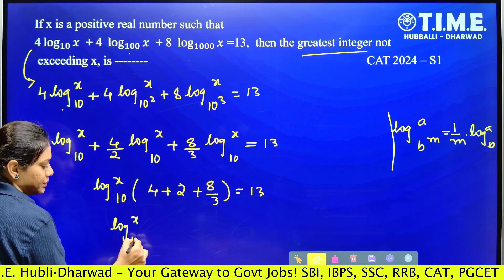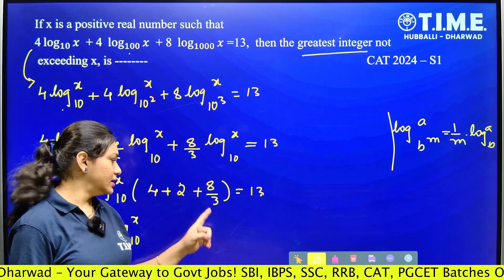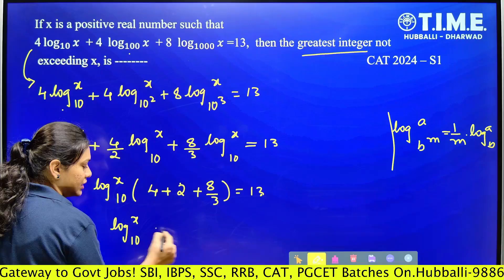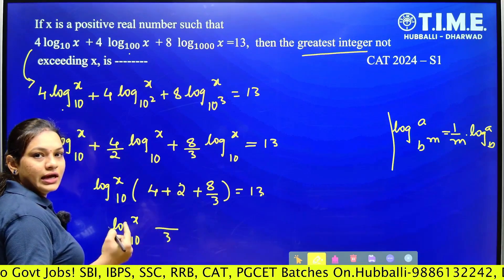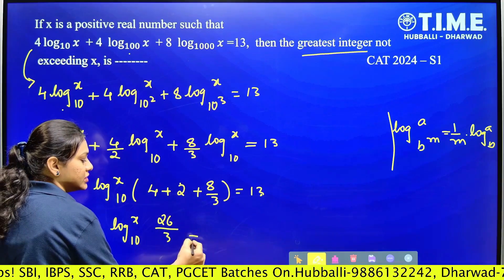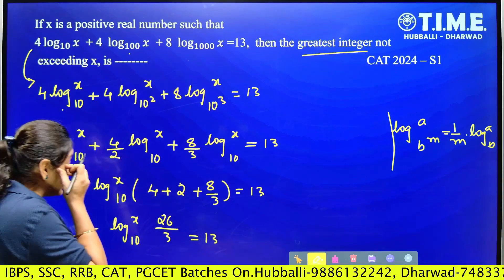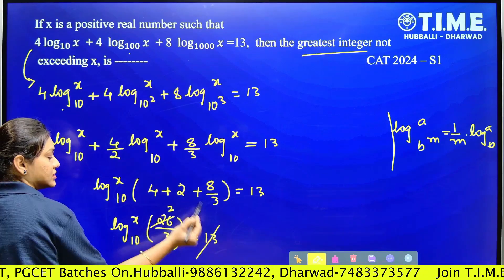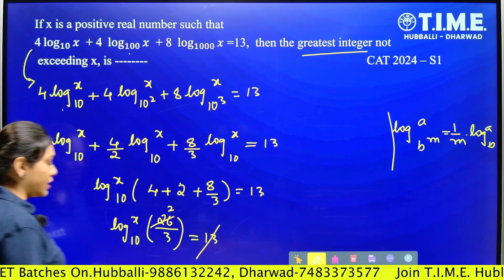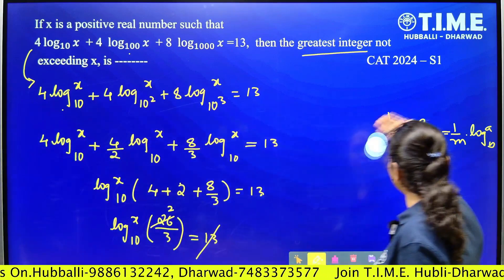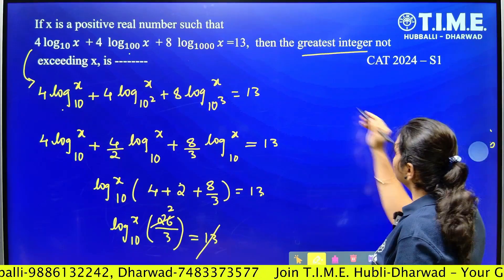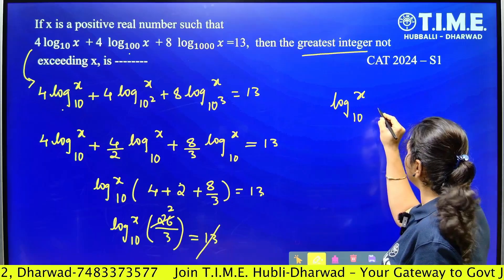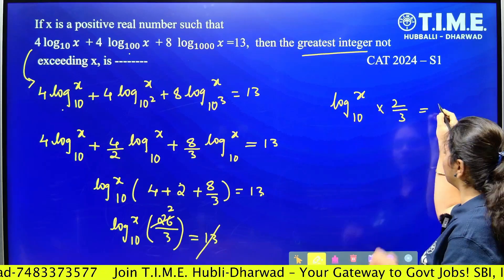Log x base 10 times: 4 plus 2 gives 6, and 6 plus 8/3 — taking LCM of 3 — gives (18 + 8)/3 = 26/3, which equals 13. We can cancel: 13 × 2 = 26, so log x base 10 × (26/3) = 13, and after simplification, log x base 10 × (2/3) = 1.